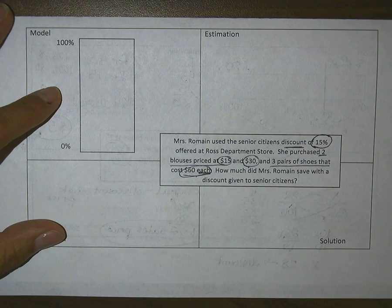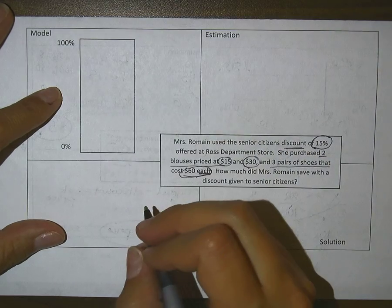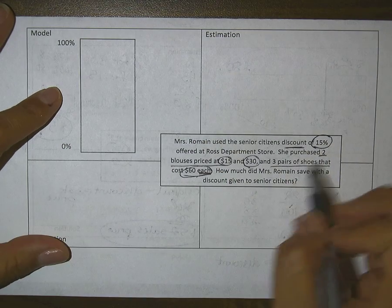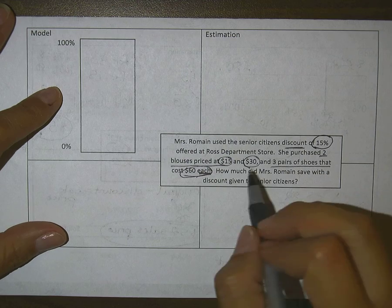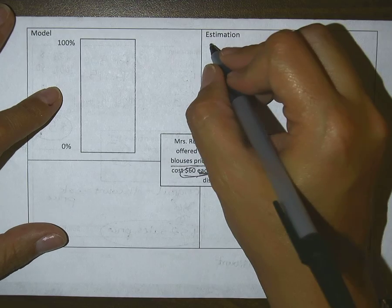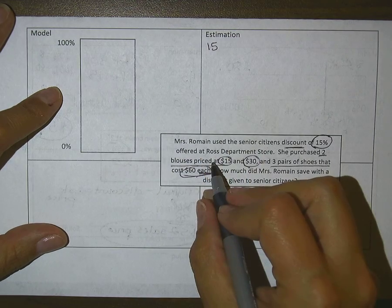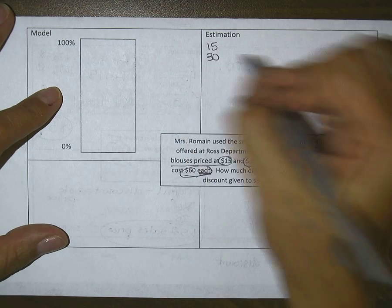Now before I can even start to set this up, I need a total. I need 100%, and she's bought quite a few things. She has a blouse for $15 and another blouse for $30, that gives me $45.